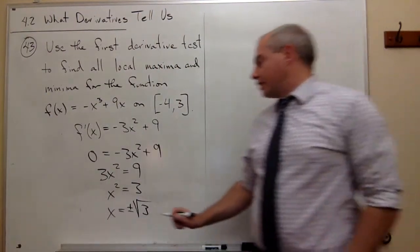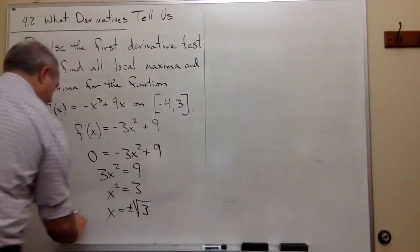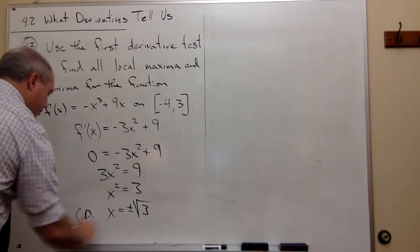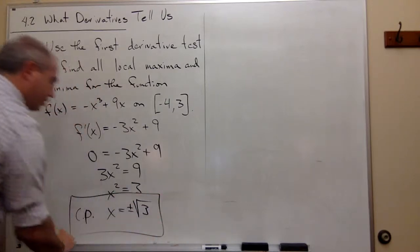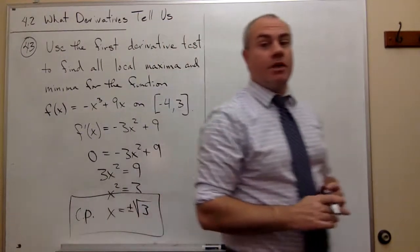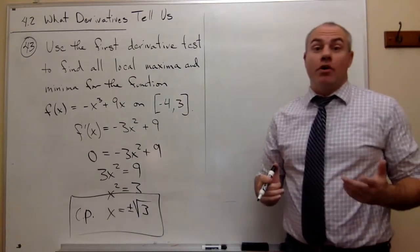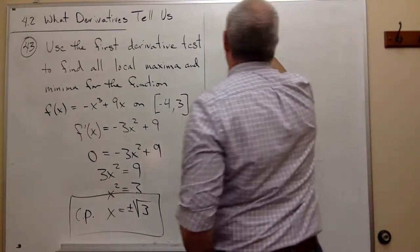So these are my critical points, plus or minus the square root of 3. Now that I know what my critical points are, let's take a number line.